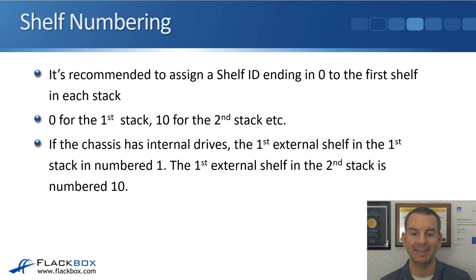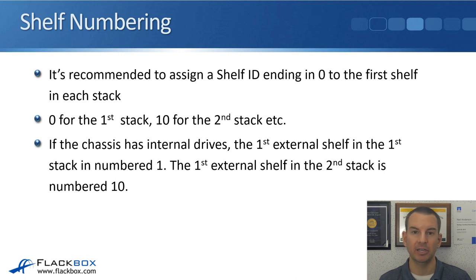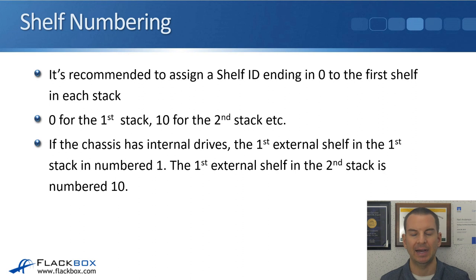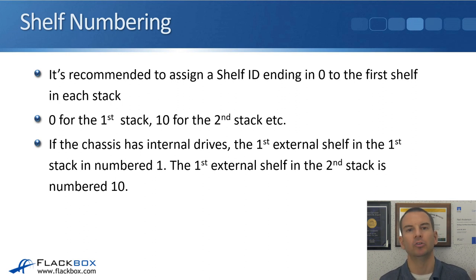It's recommended to assign a shelf ID ending in zero to the first shelf in each stack. For example, the top shelf of your first stack gets number zero, the top shelf of the next stack begins with number 10, the next with 20, then 30, and so on. If the chassis has internal drives, those are always assigned ID zero, so the first stack would start at number one instead, with subsequent stacks still following the plan of 10, 20, 30, and so on.